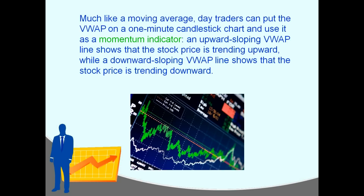Much like a moving average, day traders can put the VWAP on a one-minute candlestick chart and use it as a momentum indicator. An upward-sloping VWAP line shows that the stock price is trending upward, while a downward-sloping VWAP line shows that the stock price is trending downward. If the line is slanting upward, then the stock price is also generally trending upwards, at least in the short term.